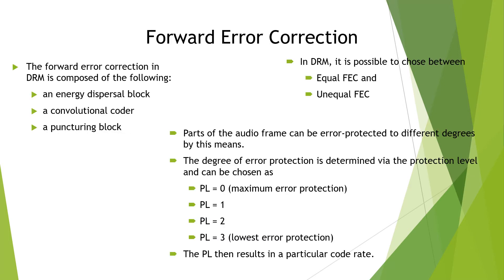Forward error correction in DRM is composed of three different blocks: an energy dispersal block, a convolutional coder, and a puncturing block. In DRM it is possible to choose between equal FEC and unequal FEC — parts of the audio frame can be error-protected to different degrees. The degree of error protection is determined via the protection level, which can be chosen among four levels: PL=0 (maximum error protection), PL=1, PL=2, and PL=3 (lowest data protection). Each protection level results in a particular code rate.